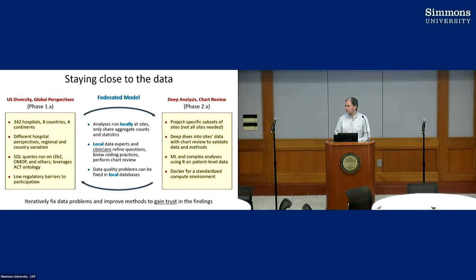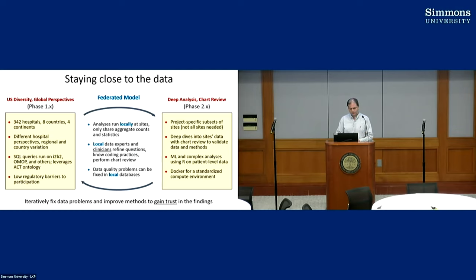There are two kinds of analyses we ask sites to do — we call them phase one and phase two. Phase one studies make very lightweight asks from sites: easy IRB requests, simple technologies, but getting a lot of hospitals to participate so we can gain a large global perspective with different regional and country variation. We just ask people to run some simple SQL queries on their I2B2, OMOP, or other databases, leveraging the ACT ontology, and get some quick results back.